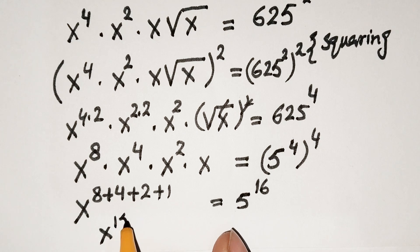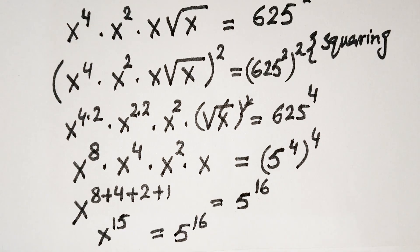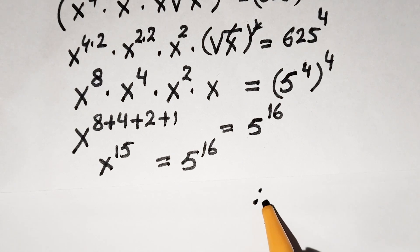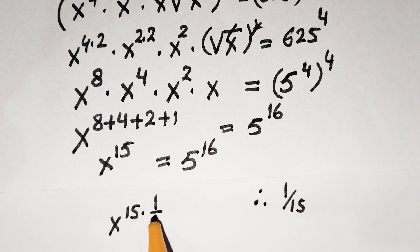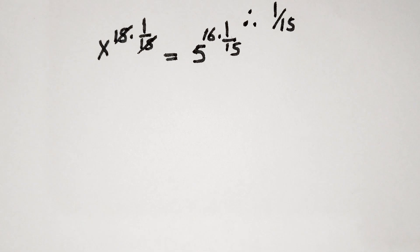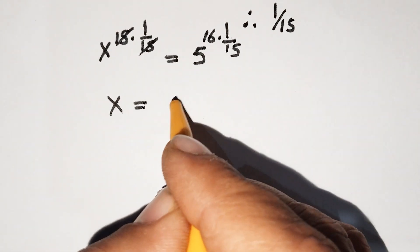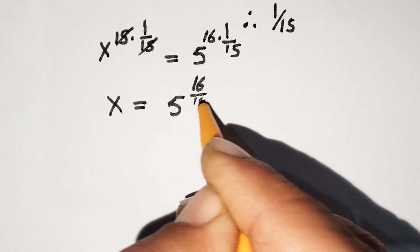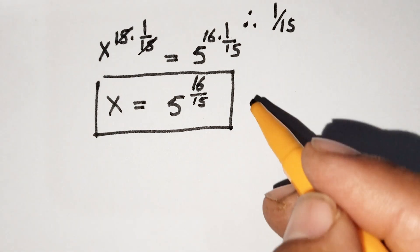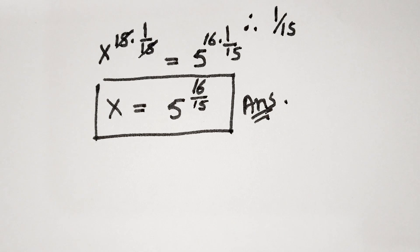So x to the power 15 is equal to 5 raised to the power 16. We now multiply the power by 1 over 15, so x raised to the power 15 times 1 over 15 equals 5 raised to the power 16 over 15. Therefore x equals 5 raised to the power 16 over 15. This is our answer from Method 1.